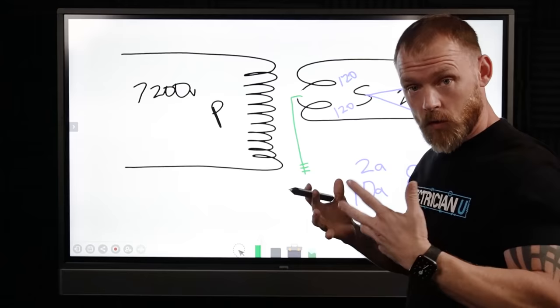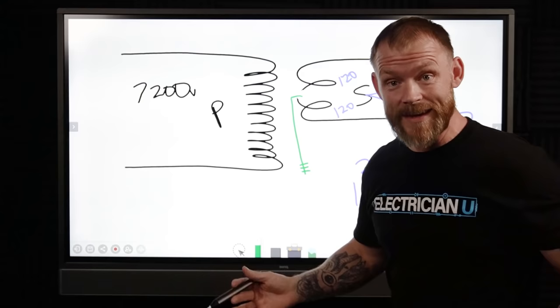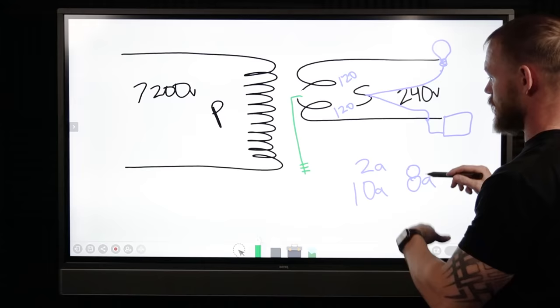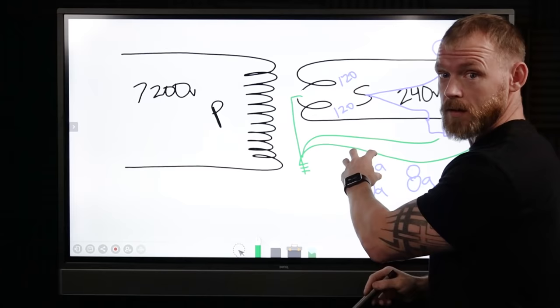Now a grounding conductor is a completely different thing; we'll get into that a little bit more at a later time. But any kind of circuits that we have that we run to things, we always have a ground that goes over to our system. We call it an equipment grounding conductor.